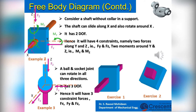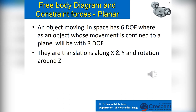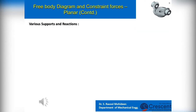Students can try the other exercises given. An object moving in space has six degrees of freedom, whereas an object whose movement is confined to a plane will have three degrees of freedom — translations along X and Y, and rotation around Z. In this course, we will mainly analyze planar mechanisms, whose movements are confined to a plane. Constraint forces are reactions developed due to restrictions or constraints. Now we will see various supports and the constraint forces developed in them.